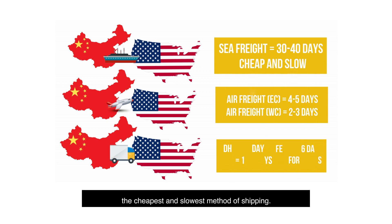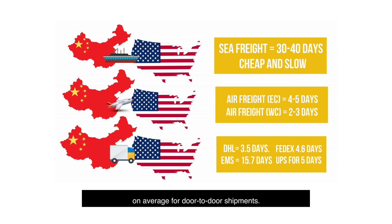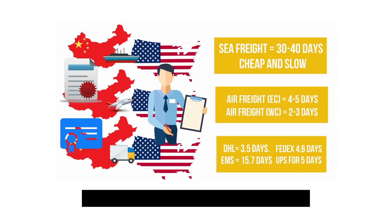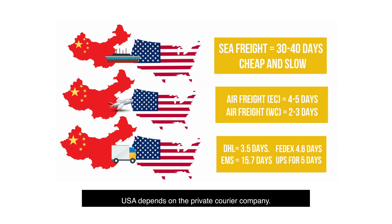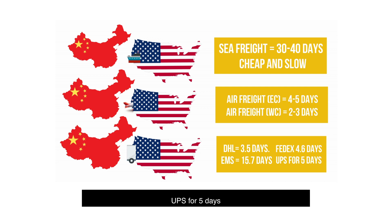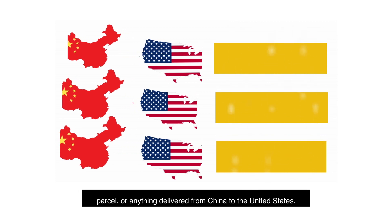Ocean freight is by far the cheapest and slowest method of shipping. The shipping time may take from 30 to 40 days on average for door-to-door shipments. Traders should remember that sea freight shipments need additional preparation when it comes to documents in both countries. Courier shipping from China to the U.S.A. depends on the private courier company. Some average shipping times include: DHL takes around 3.5 days, EMS 15.7 days, FedEx 4.6 days, and UPS 5 days. Premium services guarantee two to five business days, which is the fastest way to get your goods delivered from China to the U.S.